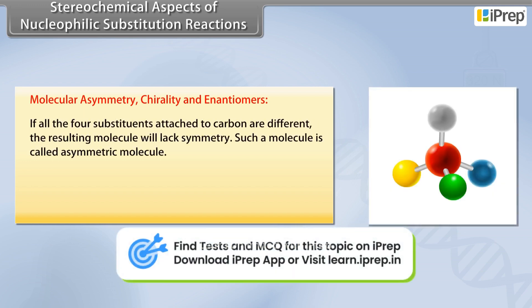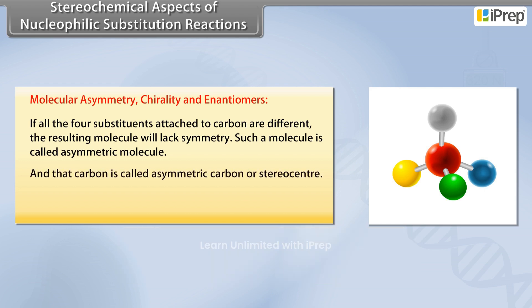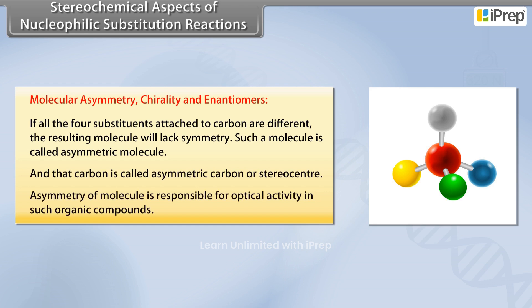If all the four substituents attached to carbon are different, the resulting molecule will lack symmetry. Such a molecule is called an Asymmetric Molecule, and that carbon is called Asymmetric Carbon or Stereocenter. Asymmetry of a molecule is responsible for optical activity in such organic compounds.